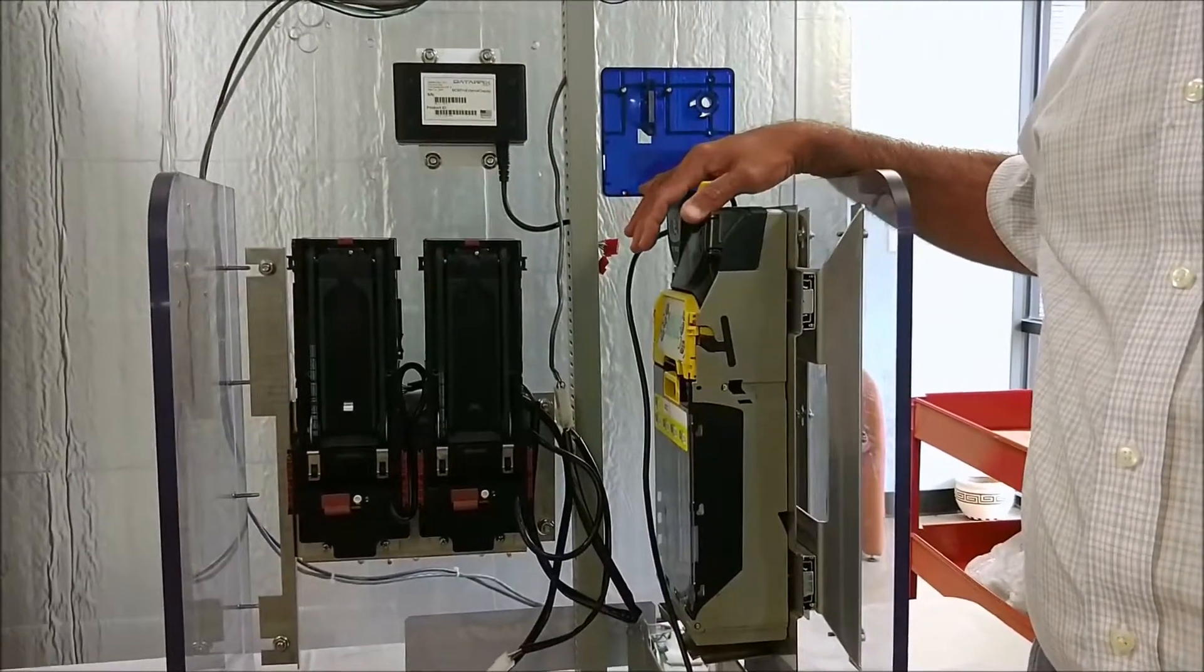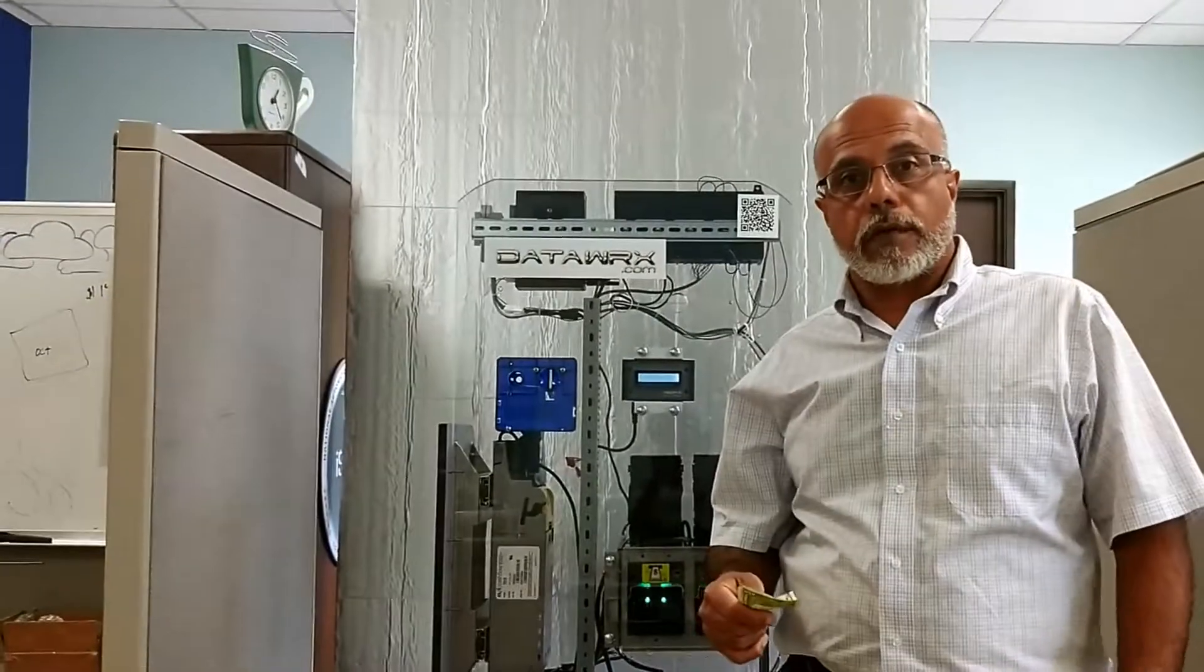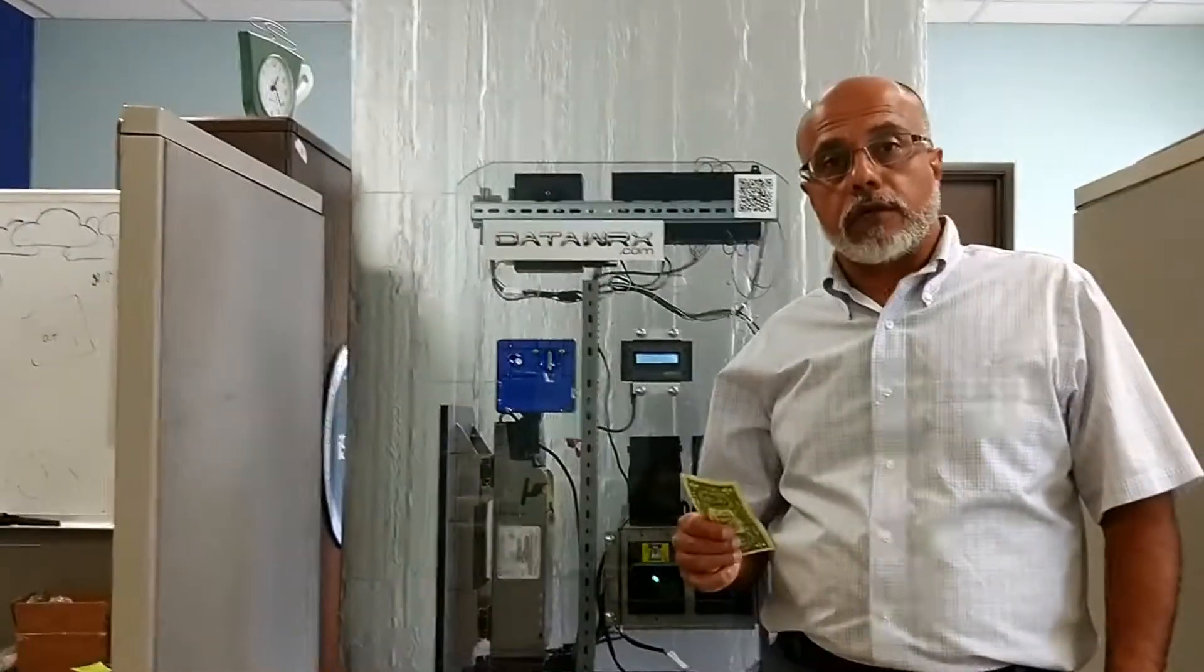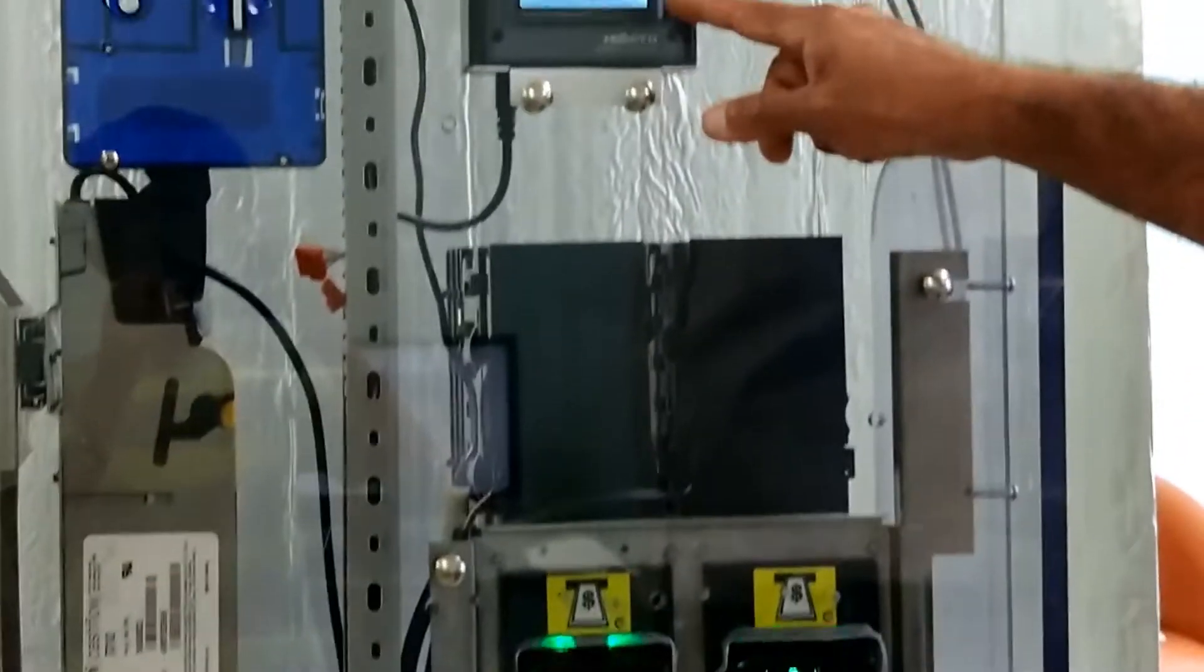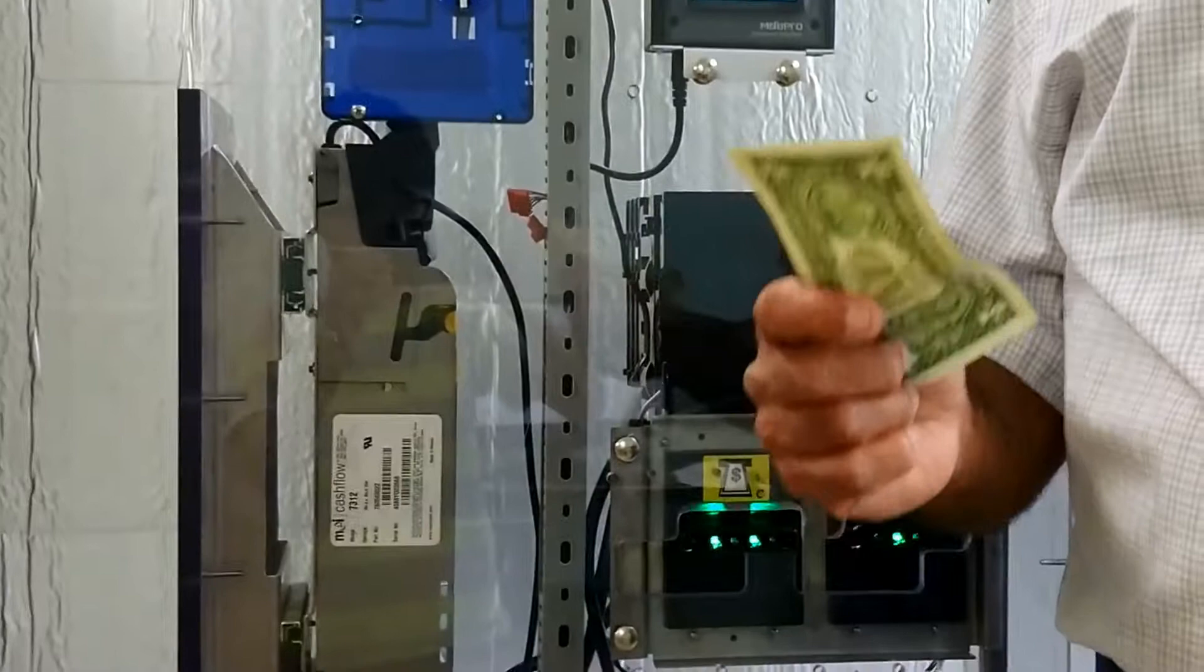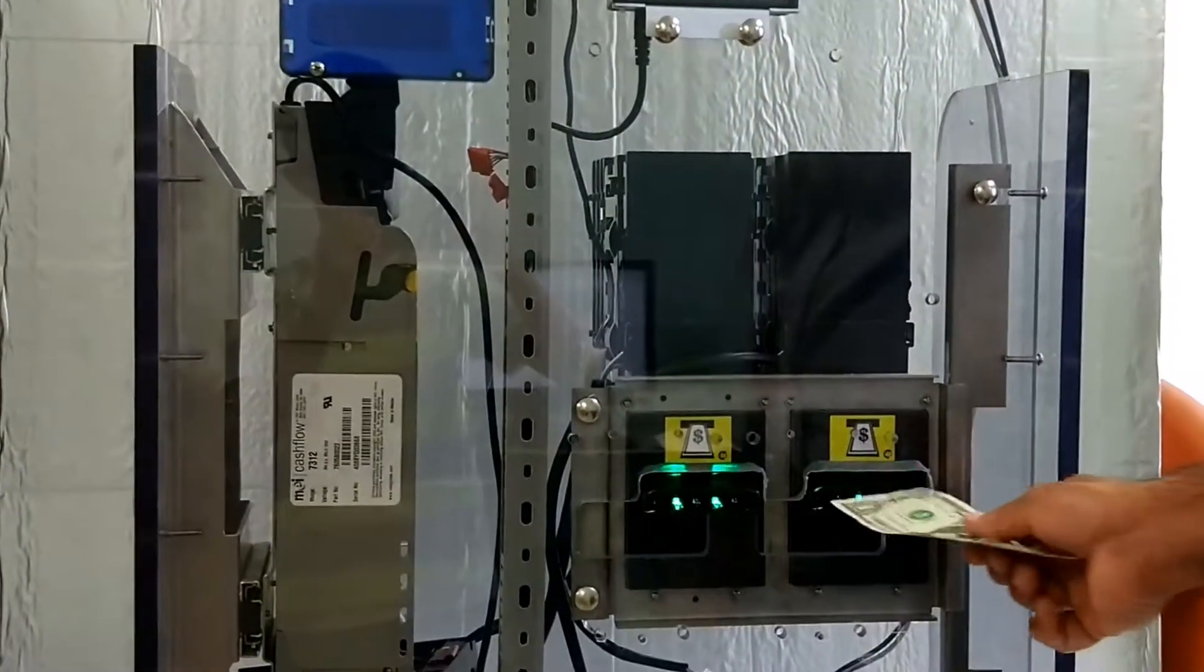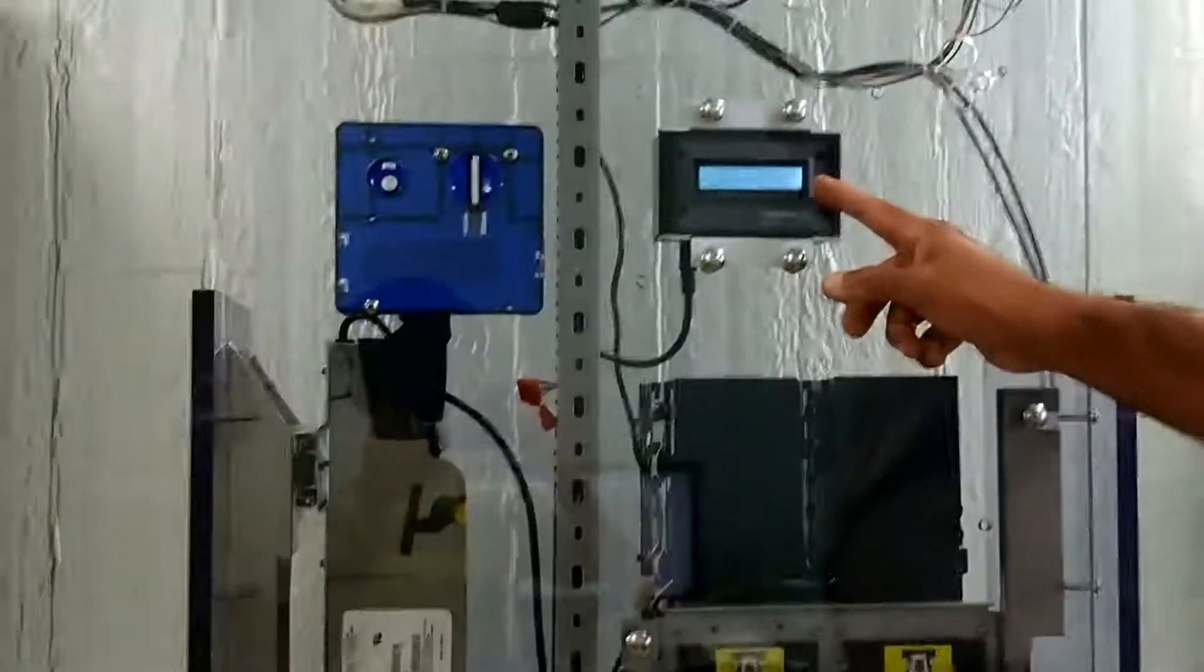And to test, we're going to insert a bill in each of these bill acceptors. Now that we've completed programming, we're going to test by inserting a bill into each bill acceptor. We're going to insert one bill into the first bill acceptor, and it shows us a credit of one dollar. We're going to insert another bill into the other bill acceptor. And we have a credit of two dollars.